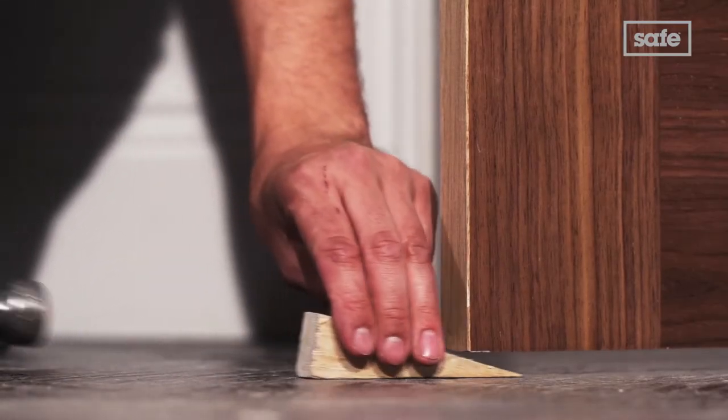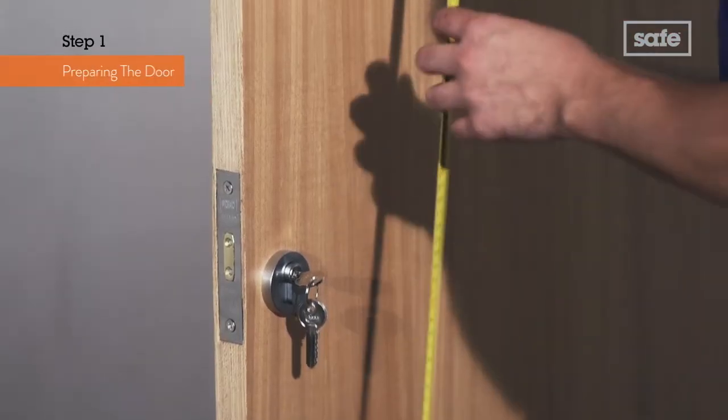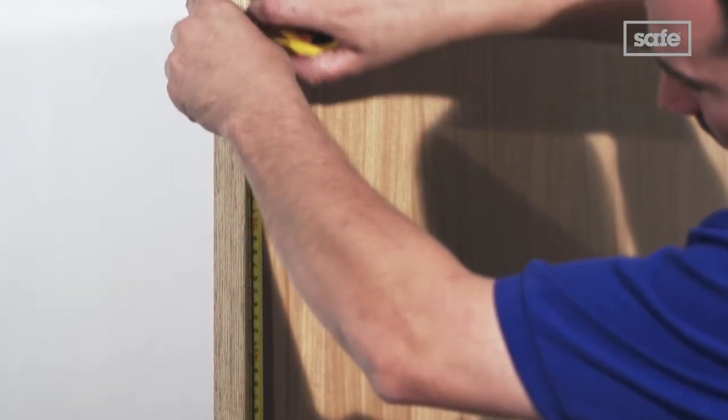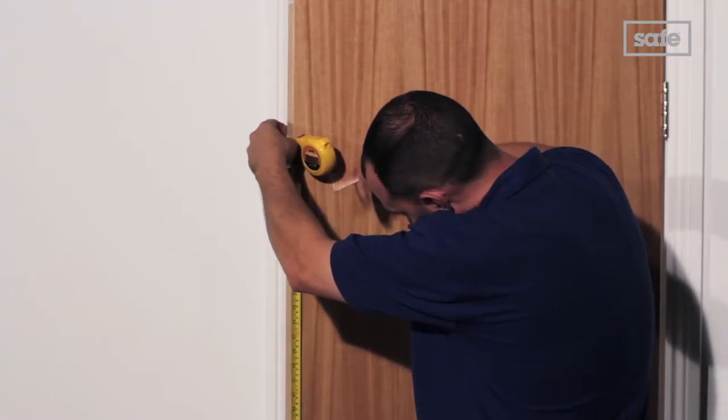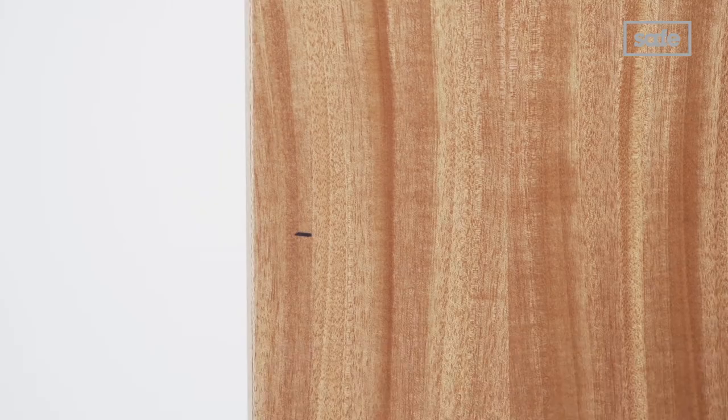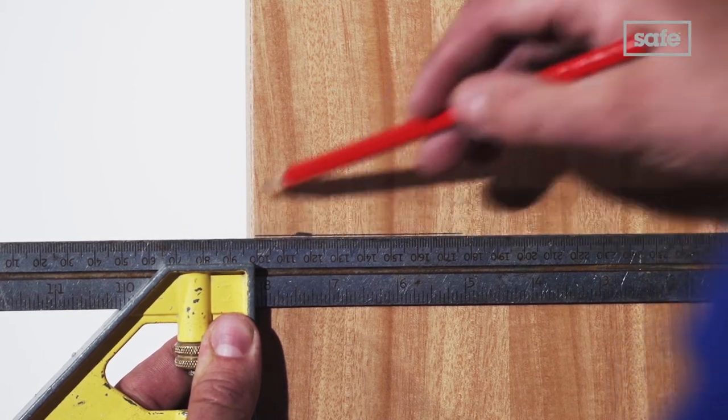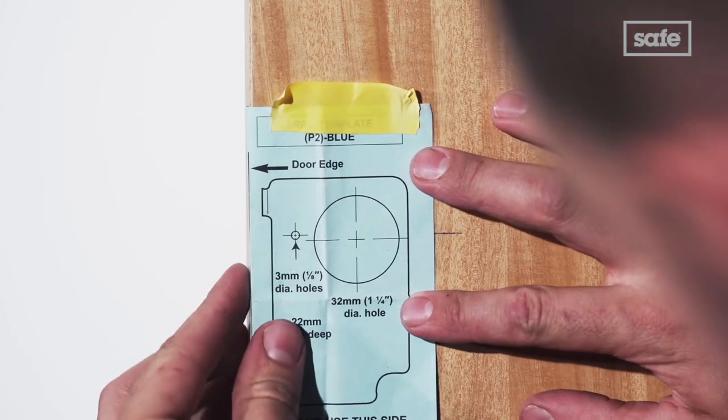Begin by placing a wedge under the door to stop it from moving. Then measure where you want your night latch to sit. In our case we've measured 1400mm. Mark this position on the door in pencil and then square the line across. Now mark the exact position of the latch as found on the lock's instructions.